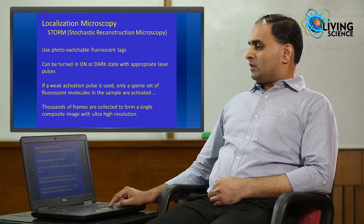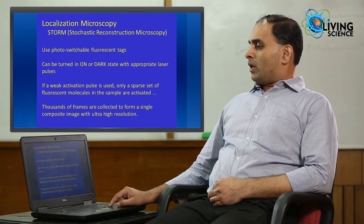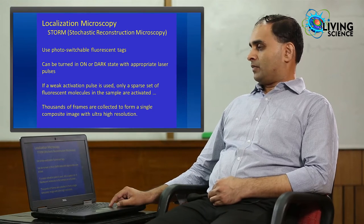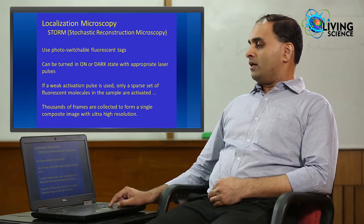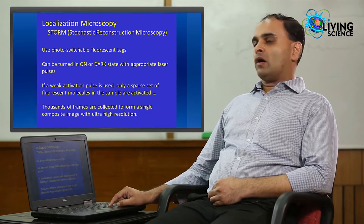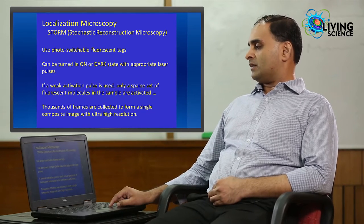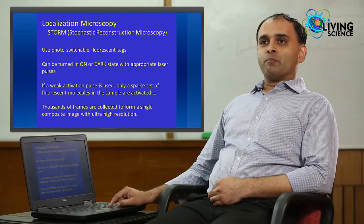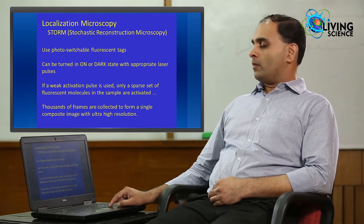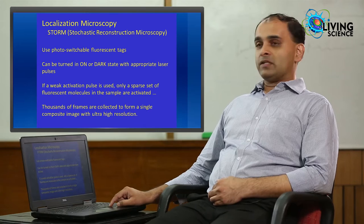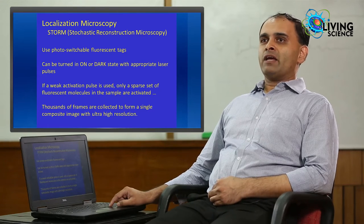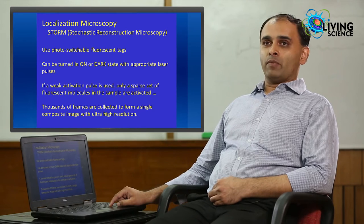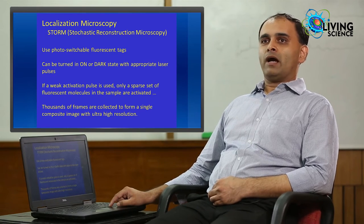To do this in a microscope, particularly you need photoswitchable fluorescent dyes or tags. They have special property that you can turn them on or dark state in on or dark state with appropriate laser pulses. Another trick that is employed in this type of microscope is that a weak activation pulse is used. So, that in any given frame only a sparse set of fluorescent molecules in the sample which are separated far apart are actually activated.